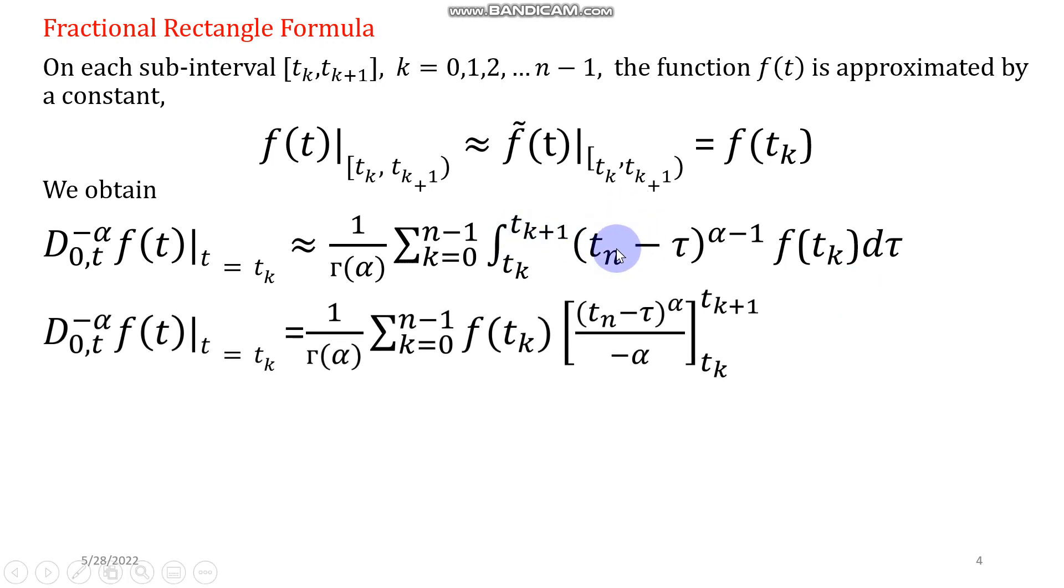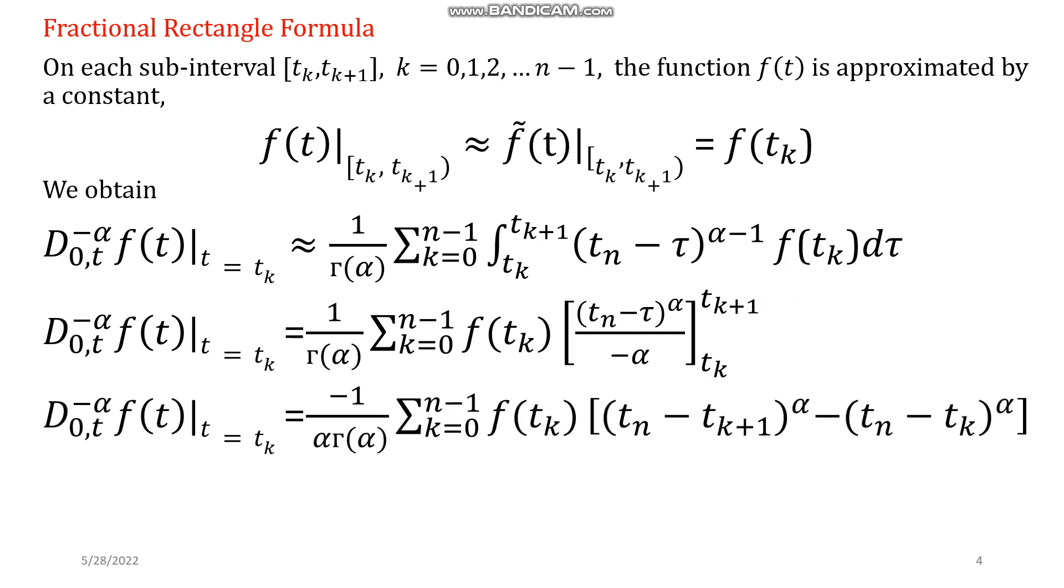This term, t_n minus tau power alpha minus 1, using simple power rule of integration, you will have this expression. And using fundamental rule of calculus, you can have this step now, where I have simply applied the upper limit minus lower limit.